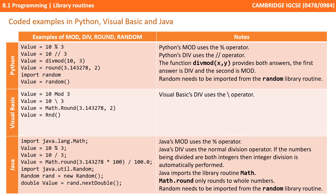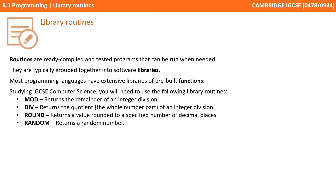These commands all differ slightly depending on the language you might actually be programming in. Here we have Python, Visual Basic, and Java — three popular languages. You can see all those different functions — mod, div, round, and random — and how they are actually implemented, with some additional notes on the right. That's everything you need to know for the exam. Pause the video and take some notes.